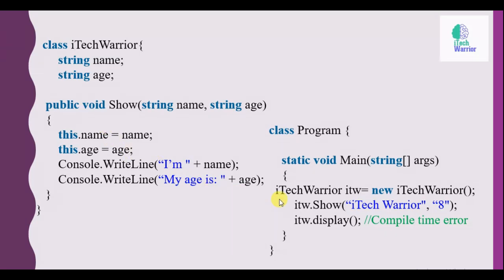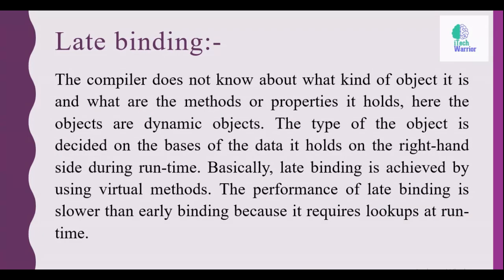Late binding: the compiler does not know about what kind of object it is and what are the methods and properties it holds.